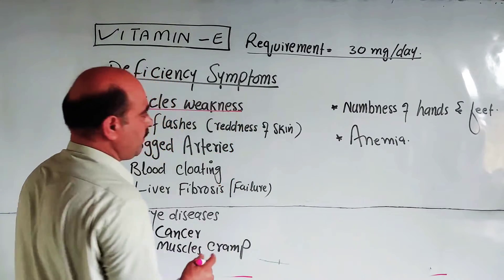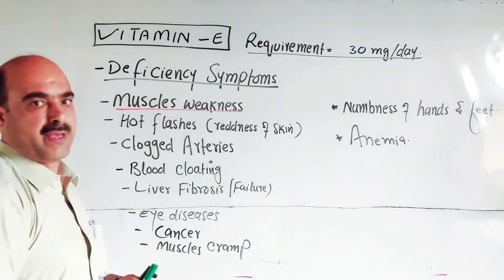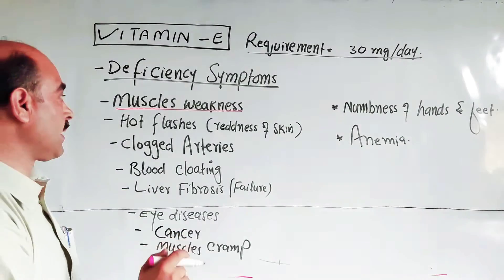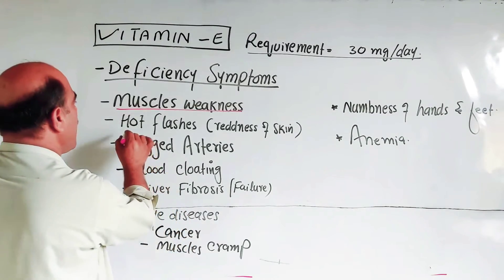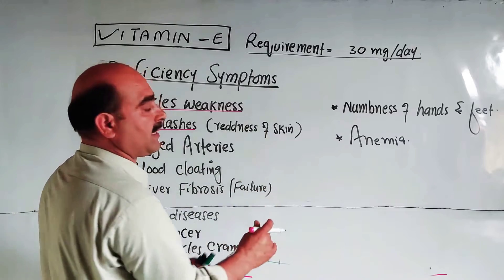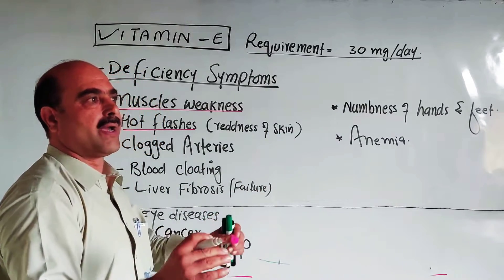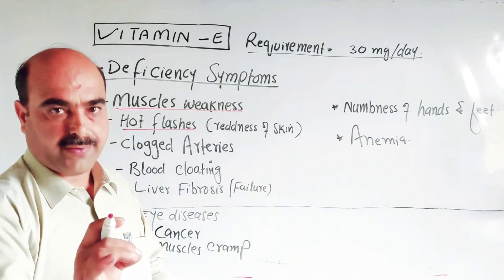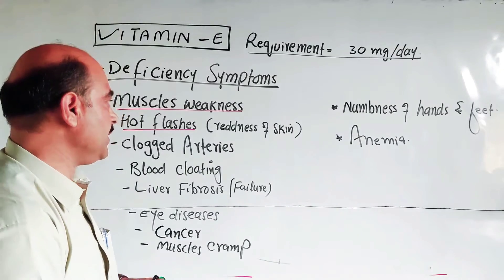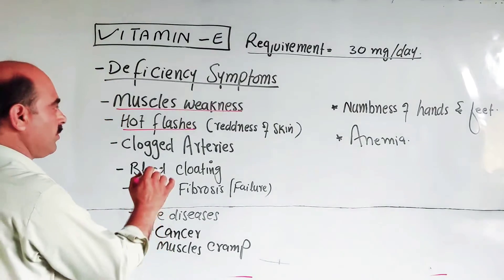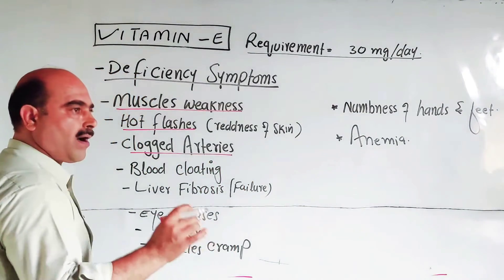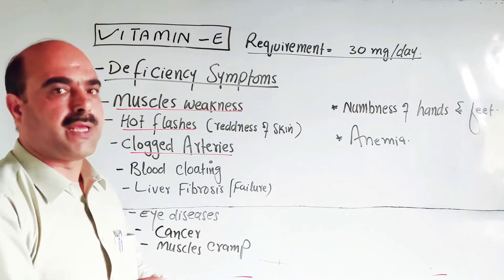The first deficiency symptom is muscle weakness - the muscles do not develop fully and lack strength. Another symptom is hot flashes, where there is redness and excessive heat in the skin. There is also clogging of the arteries, where the arteries become blocked.